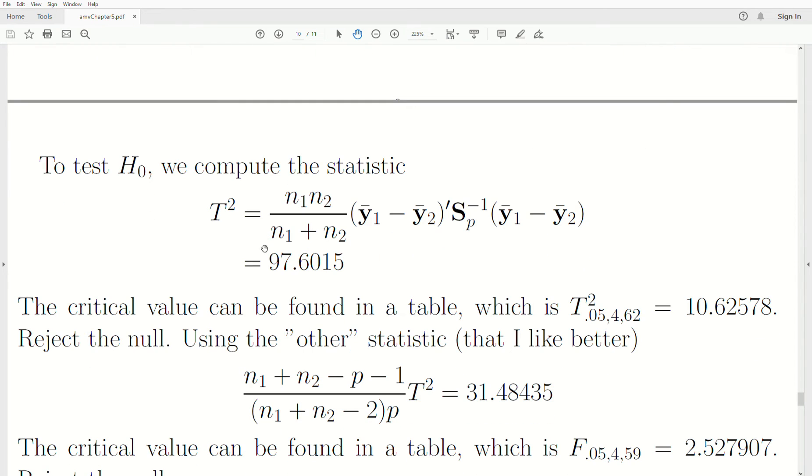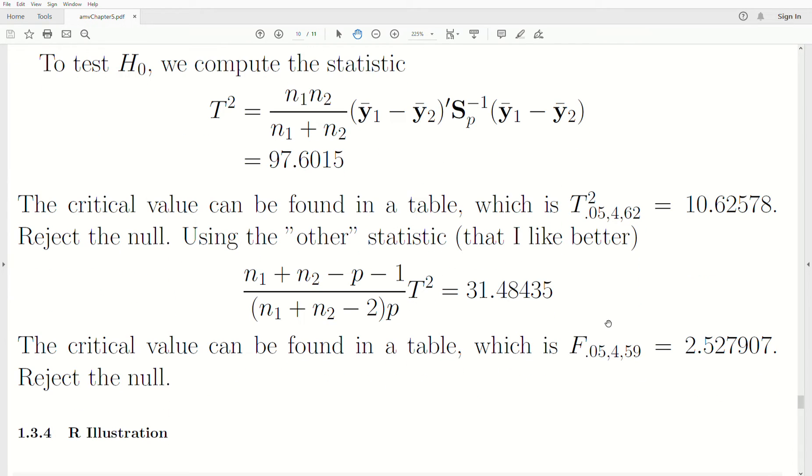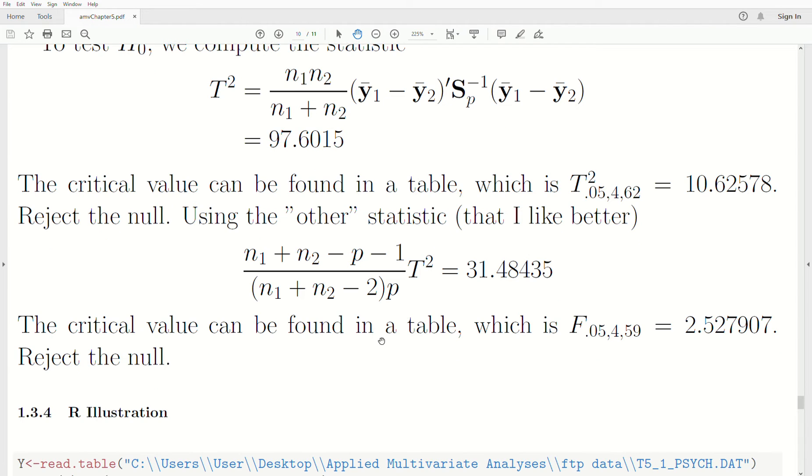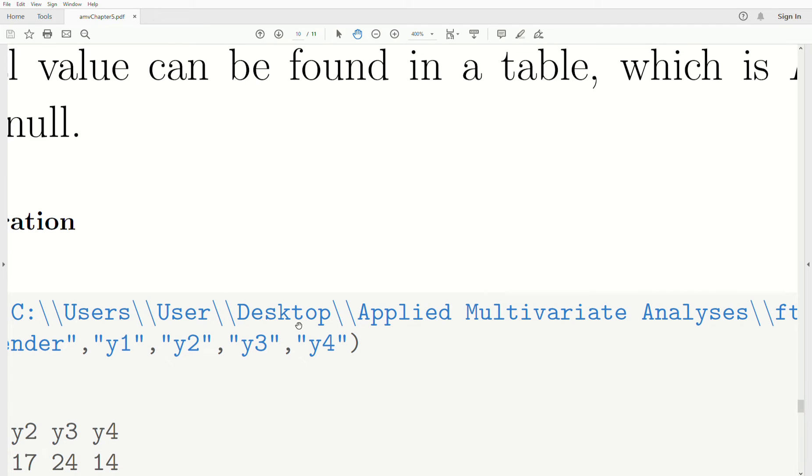Using the other statistic that I like better, we get 31.48. We just take our t-squared, 97, times this constant, and we get 31. The critical value can be found in the table or use R, which is F05,4,59 = 2.527907. So 31 is definitely bigger than that, so we reject the null hypothesis. Let's look at this R illustration and call it quits for today.